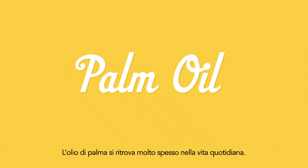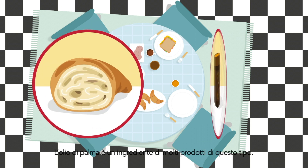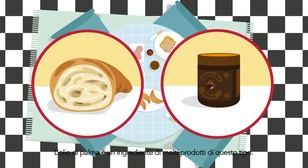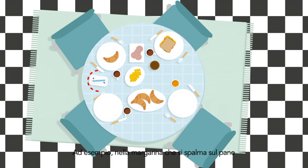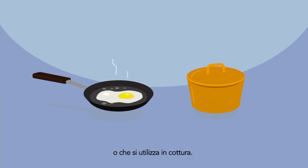Palm oil is used a lot in our everyday life. You can find it on your breakfast table in the morning. Palm oil is an ingredient in many of these products. For example, in the margarine you spread on your sandwich and use for baking and cooking.